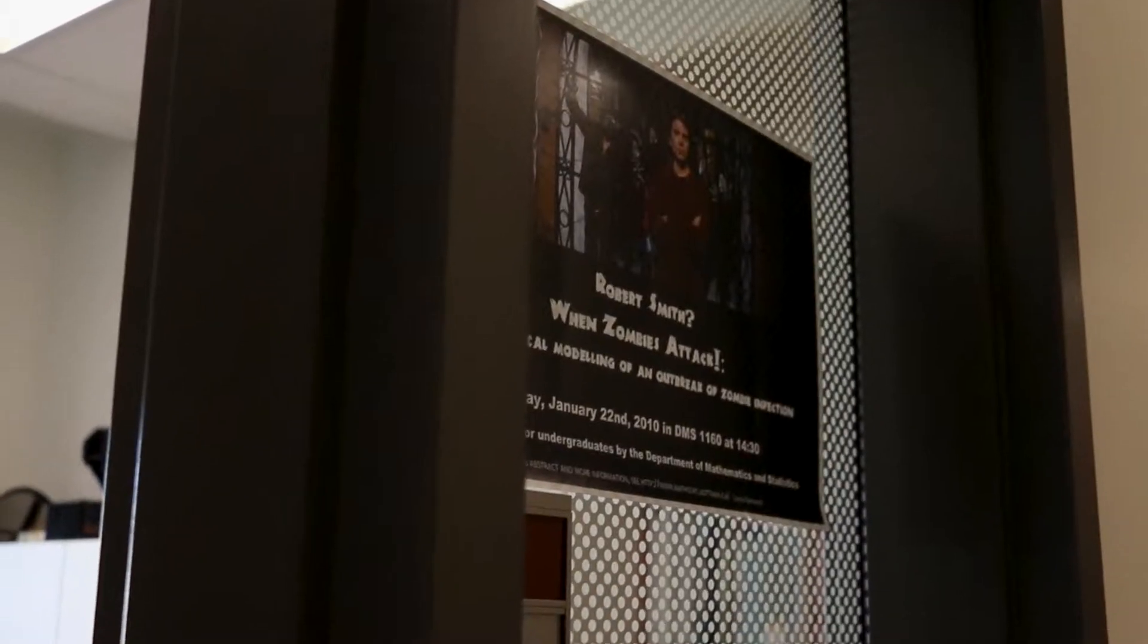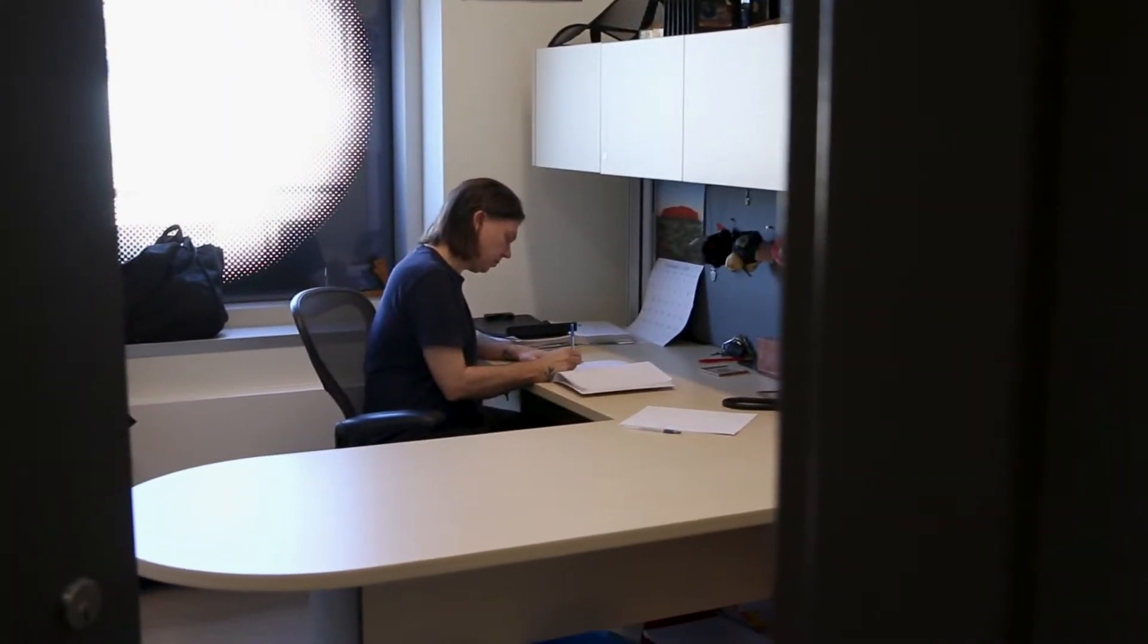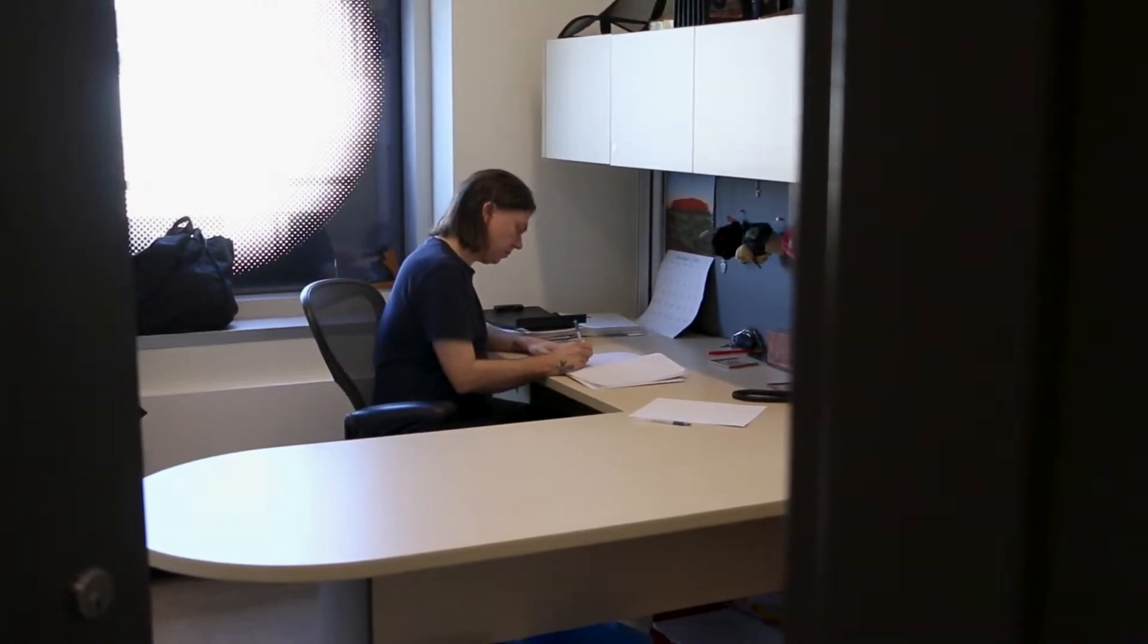My name is Dr. Robert Smith. I'm a professor in the Department of Mathematics and Statistics at the University of Ottawa, but I'm also cross-appointed to the Faculty of Medicine where I'm in the Department of Epidemiology. I have been at the University of Ottawa for 11 years now.